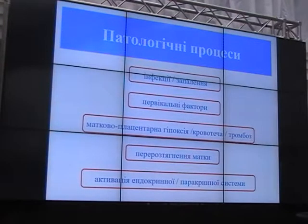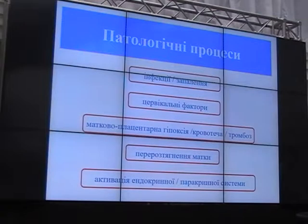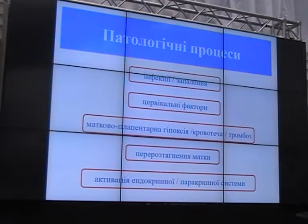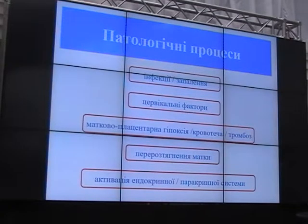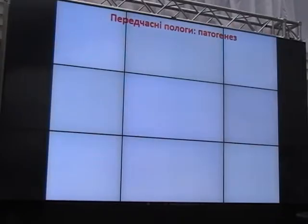The pathways that provoke earlier activation of this mechanism have been summarized in five major areas of pathophysiology: infection and inflammation — probably the single most important cause of preterm birth — cervical factors, utero-placental hypoxia, bleeding or thrombosis, uterine over-distension as in multiple pregnancies or uterine malformation, and maternal-fetal endocrine or paracrine activation. The pathogenesis, which is essentially an early timing of pregnancy interruption, can be recognized as a risk factor much earlier than pregnancy itself.